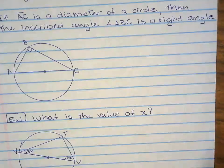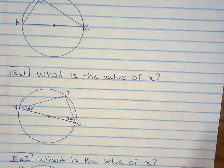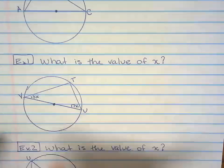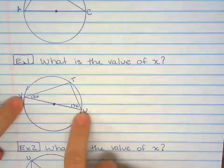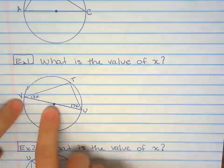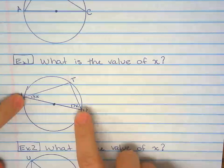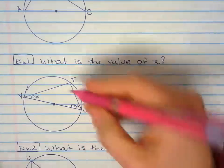So two examples, one of them, find X. This is the diameter, clearly the diameter, because it's going through the center, and it goes from side to side right there.